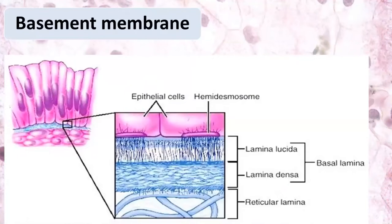Under the basal pole there is a basement membrane, which is a special lamina containing two layers: lamina lucida and lamina densa. They are made of glycoproteins — for example, laminin in the lamina lucida — and lamina densa is made of type 3 collagen. Under the basal lamina there is a reticular lamina containing reticular fibers of the underlying connective tissue. Some components are produced by epithelial cells and some by cells of the underlying connective tissue. It's the essential structure of all epithelia.